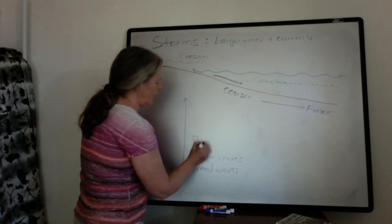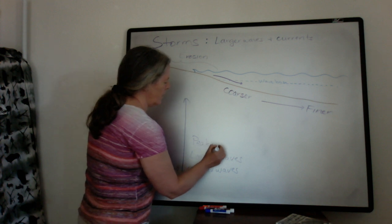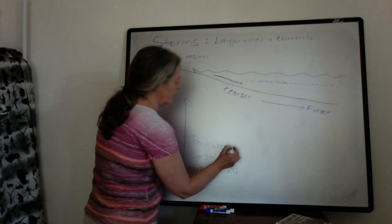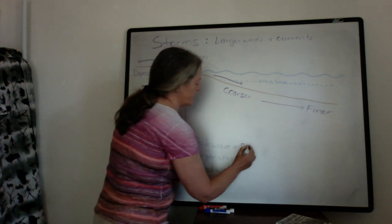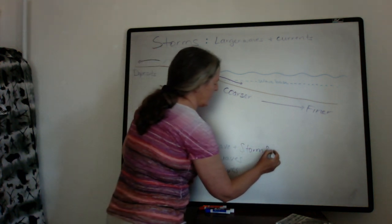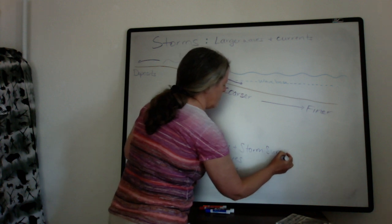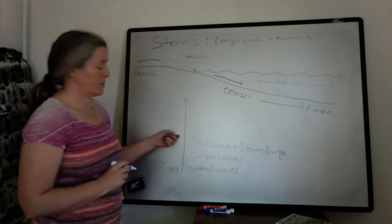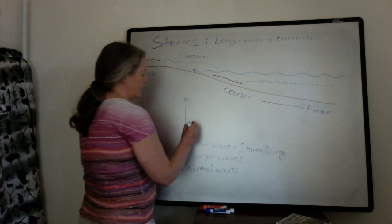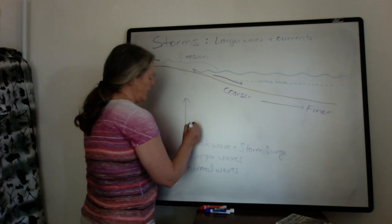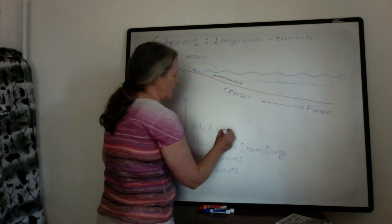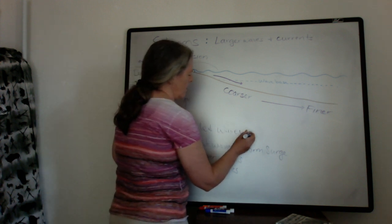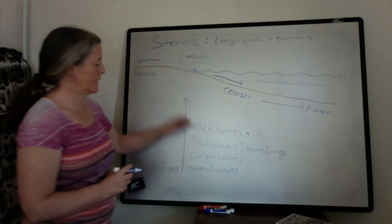We end up with peak waves plus the storm surge. This is the time when there's the most energy around. Then we have medium waves, and the storm surge starts retreating.